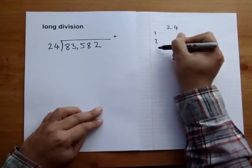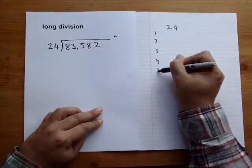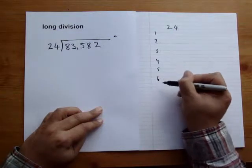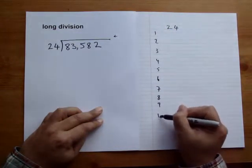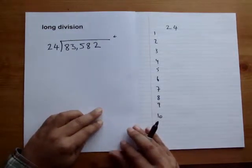One, two, three, four, five, six, seven, eight, nine, ten. I don't think there's a need to go beyond 10. Right, one times 24, simply 24.